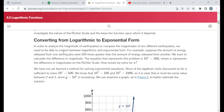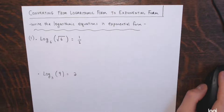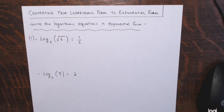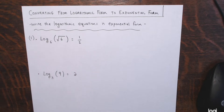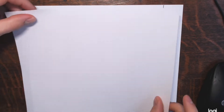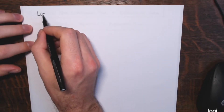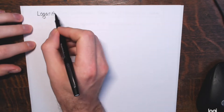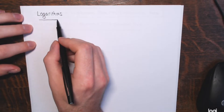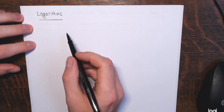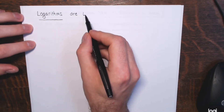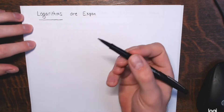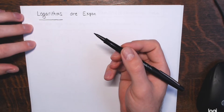So before I get into my first example, I want to talk a little bit about what logarithms are. Logarithms — this is a fancy word for exponents. Logarithms are just exponents, but they just don't look like exponents. They're not in the same form that exponents are.